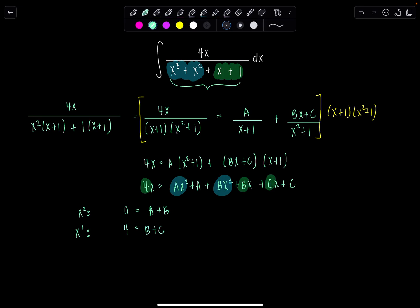And then lastly, x to the 0, or my constant term, I don't have one at all. So that has to equal what's left over here, my constants a plus c.